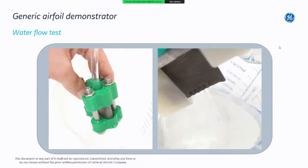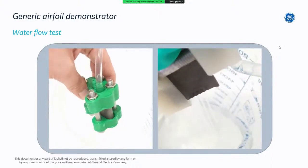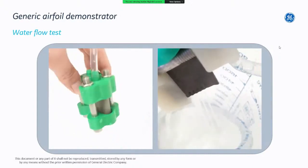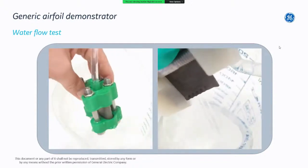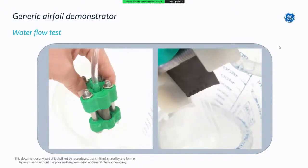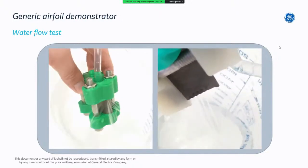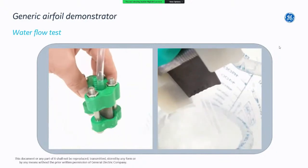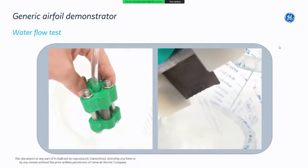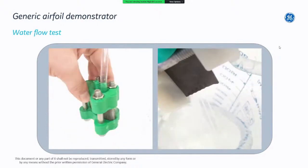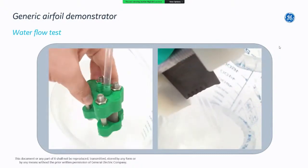In these two videos I would like to show that EBM can produce very fine features. EBM often has the reputation of poor resolution, but this airfoil shows cooling channels as small as 0.5 millimeters in size — and you can see water being passed through those cooling channels.